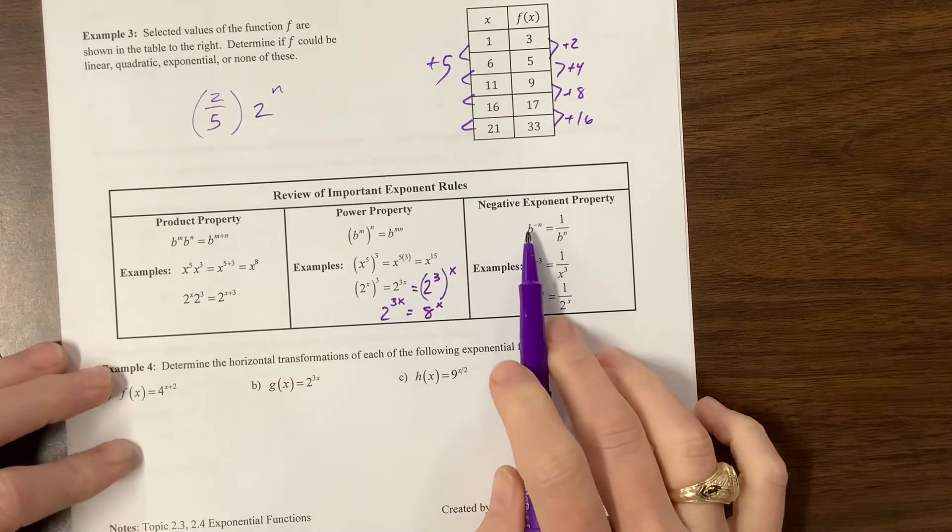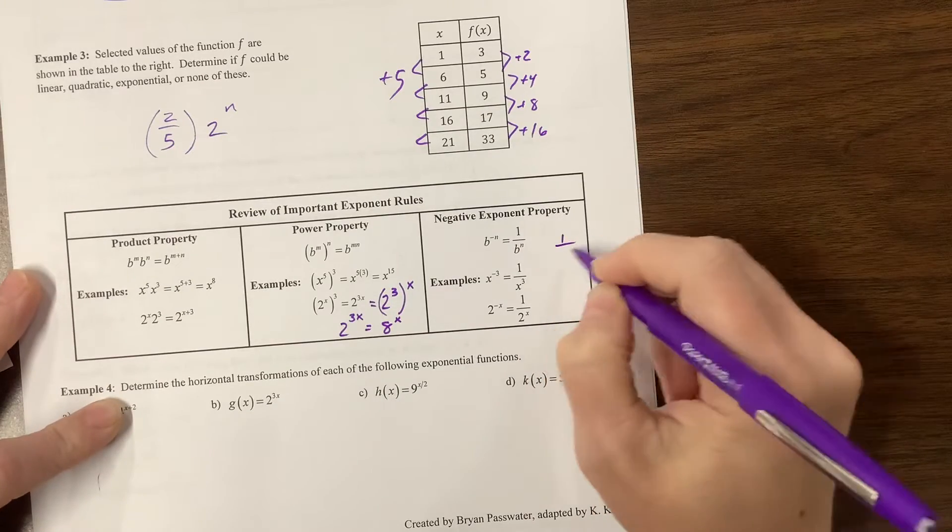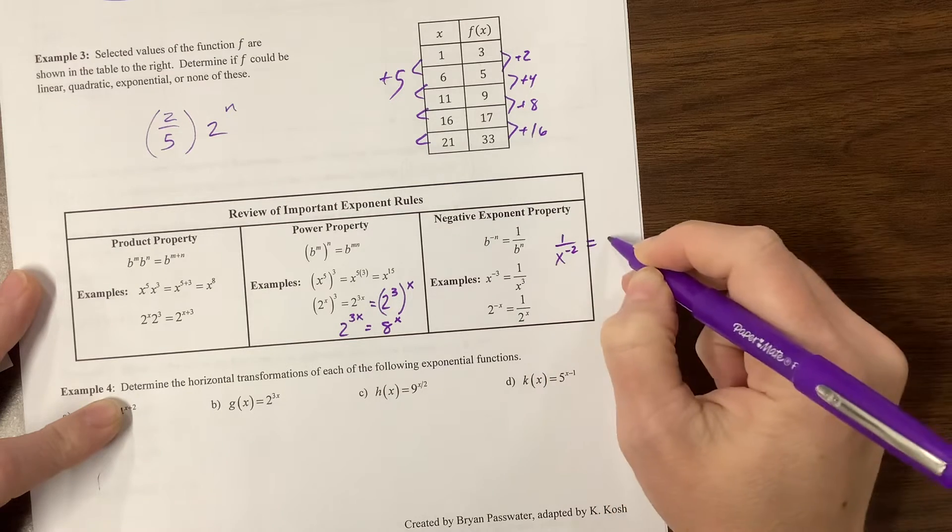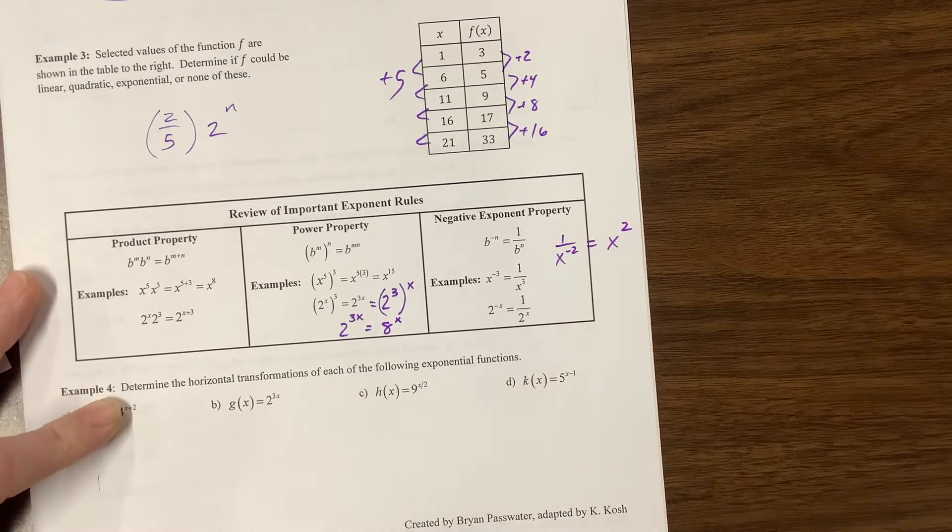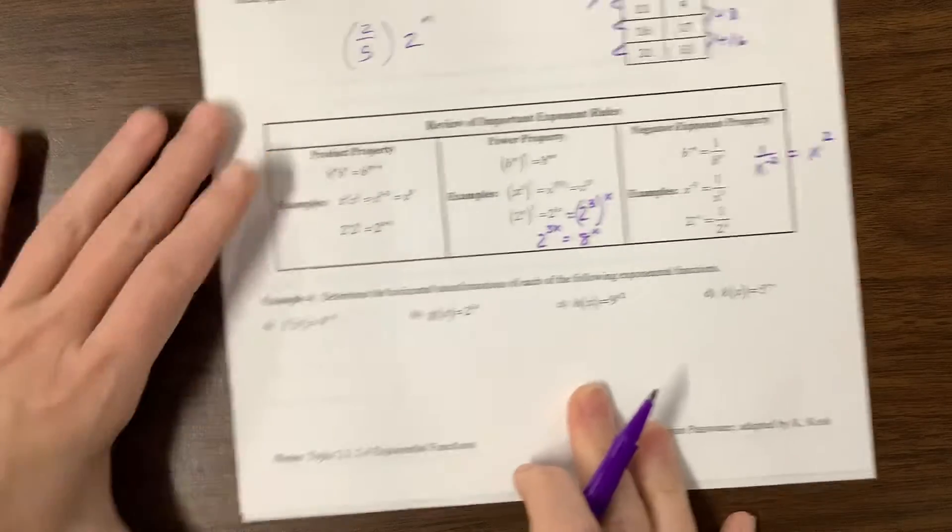The negative property, if it's negative, it moves it from the numerator to the denominator. Likewise, if it's 1 over x^(-2), that would be equal to x^2 in the numerator, so denominator to the numerator. Super. Okay, so here we go.